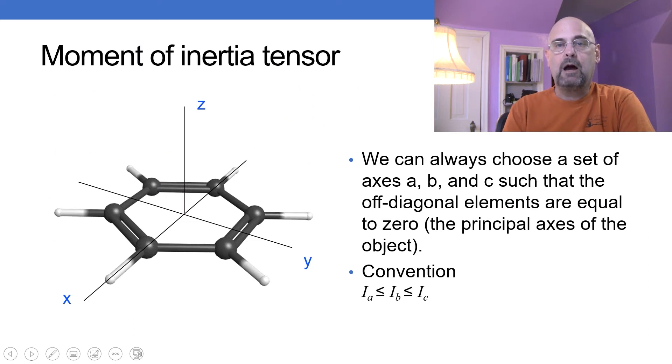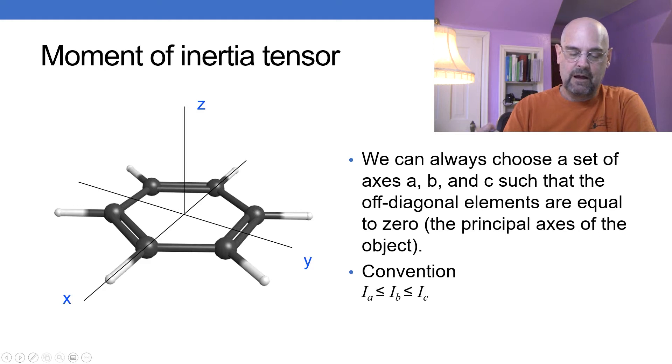Remember we talked about the idea that the moment of inertia is actually a tensor. Now we can always choose a set of axes a, b, or c such that the off diagonal elements are equal to zero. I'm not going to try to figure out which one's a, b, or c, but for benzene the x, y, and z coordinates do make a good set of axes. In other molecules and structures we have to find other ways to find that.